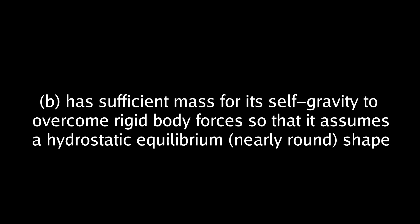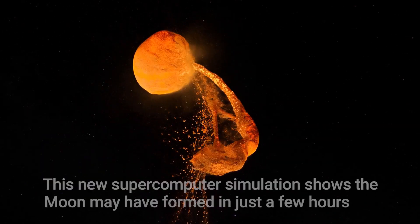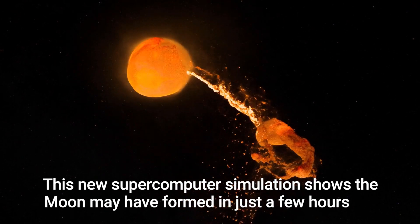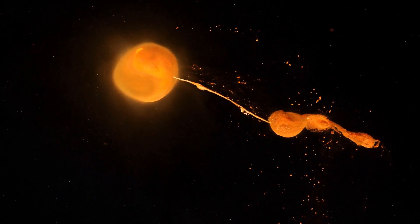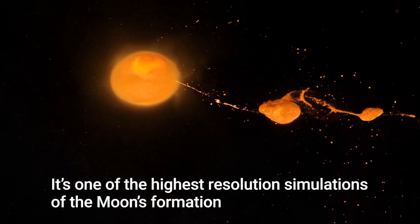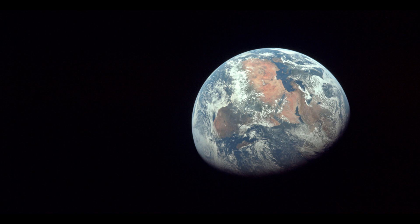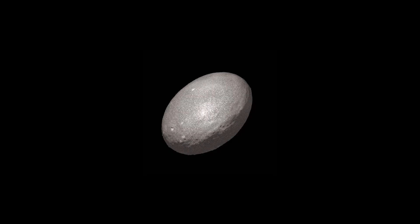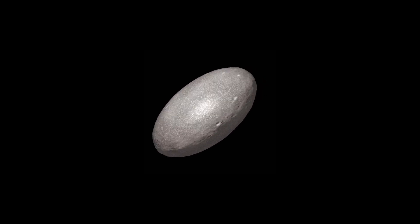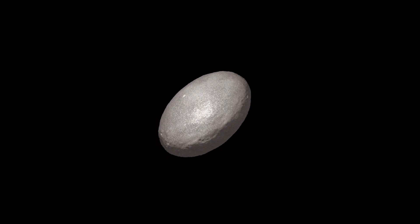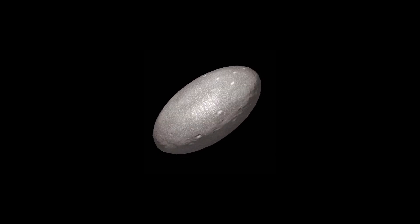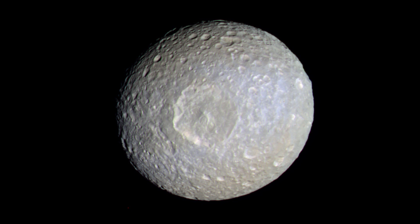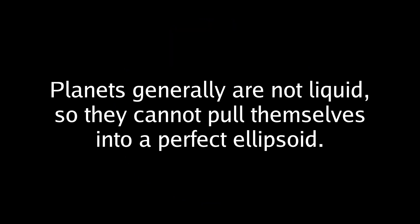What about Criterion B? Has sufficient mass for its self-gravity to overcome rigid body forces so that it assumes hydrostatic equilibrium, nearly round shape. A liquid under the influence of its own gravity will pull itself into a spheroid shape. If the body is not rotating, this will be a perfect sphere. If it is rotating, it will be an oblate spheroid, which is similar to the Earth, which is 42 kilometers wider at the equator than at the poles. If it is rotating fast enough, it will become a scalene ellipsoid, like the dwarf planet Haumea. If there are tidal forces on the object, the object can also be pulled into a scalene ellipsoid, as seen with this photograph of Mimas as a result of Saturn's tidal forces.